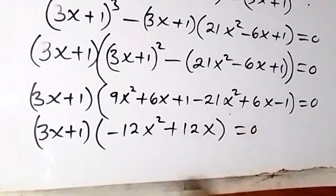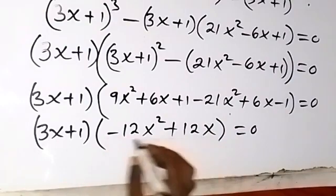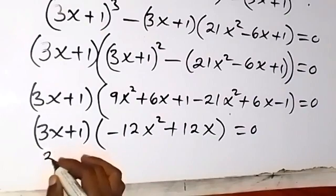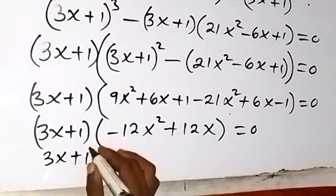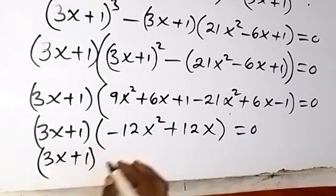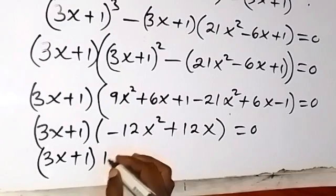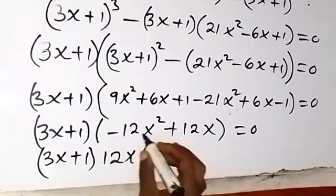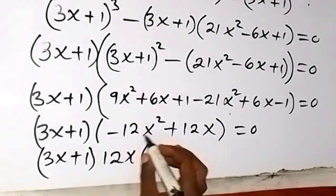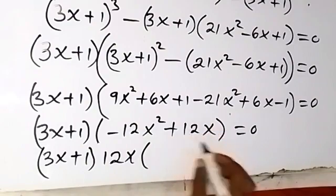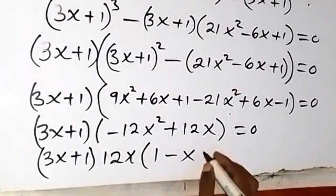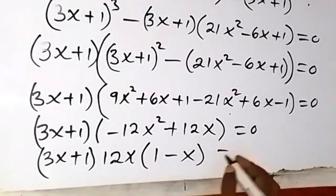We can factor further from the second bracket. Taking out 12x, what is left is (minus x plus 1), which we write as (1 minus x). So we have (3x plus 1) times 12x times (1 minus x) equals zero.